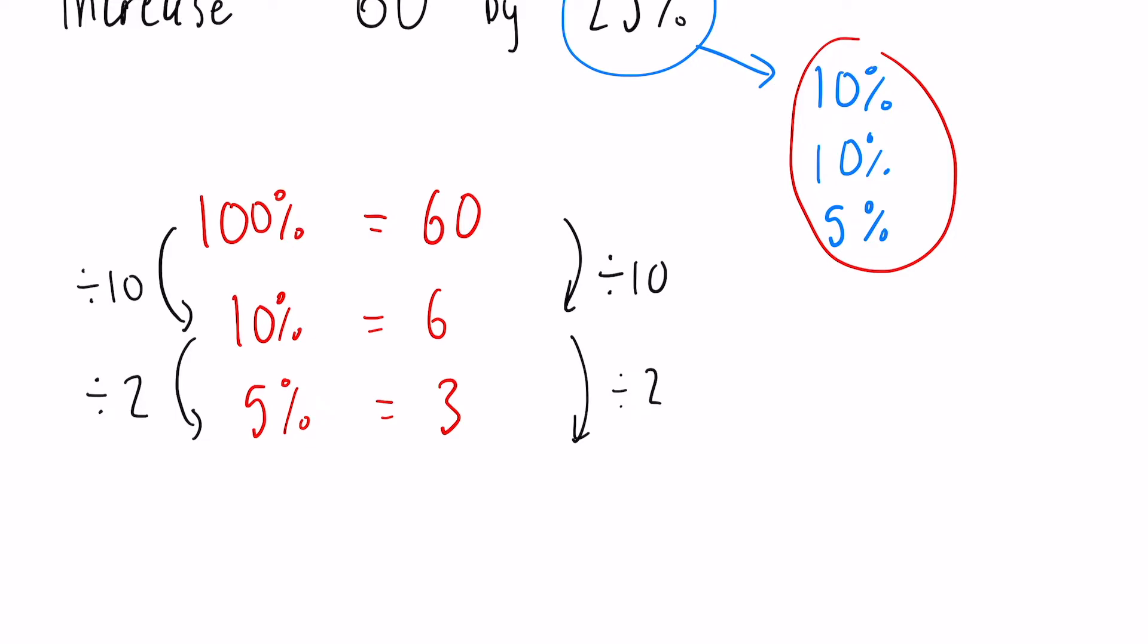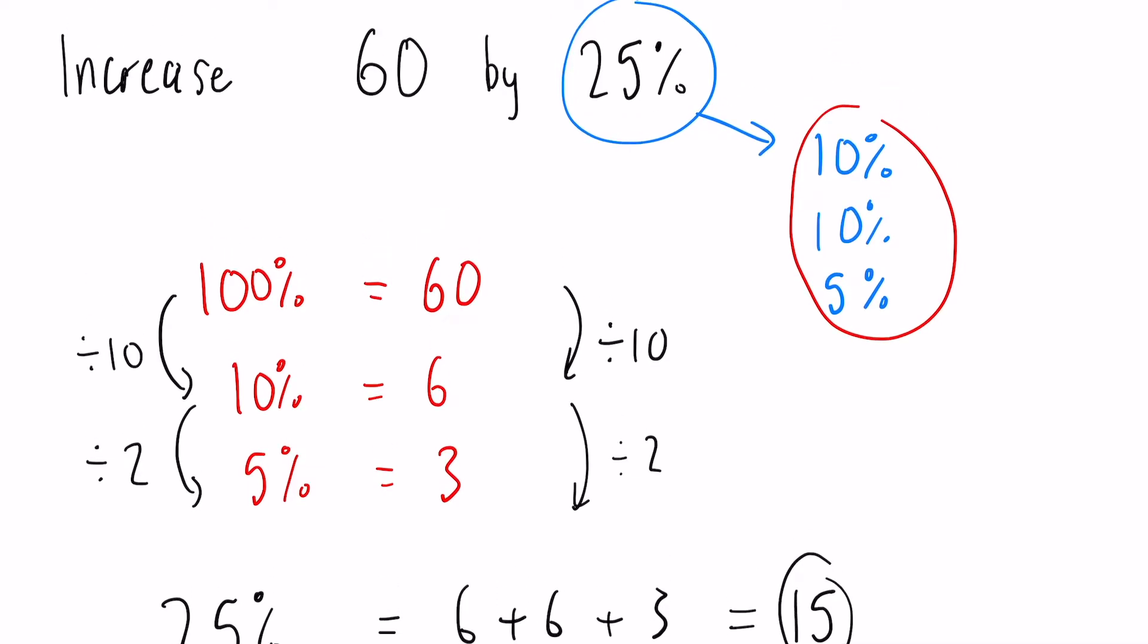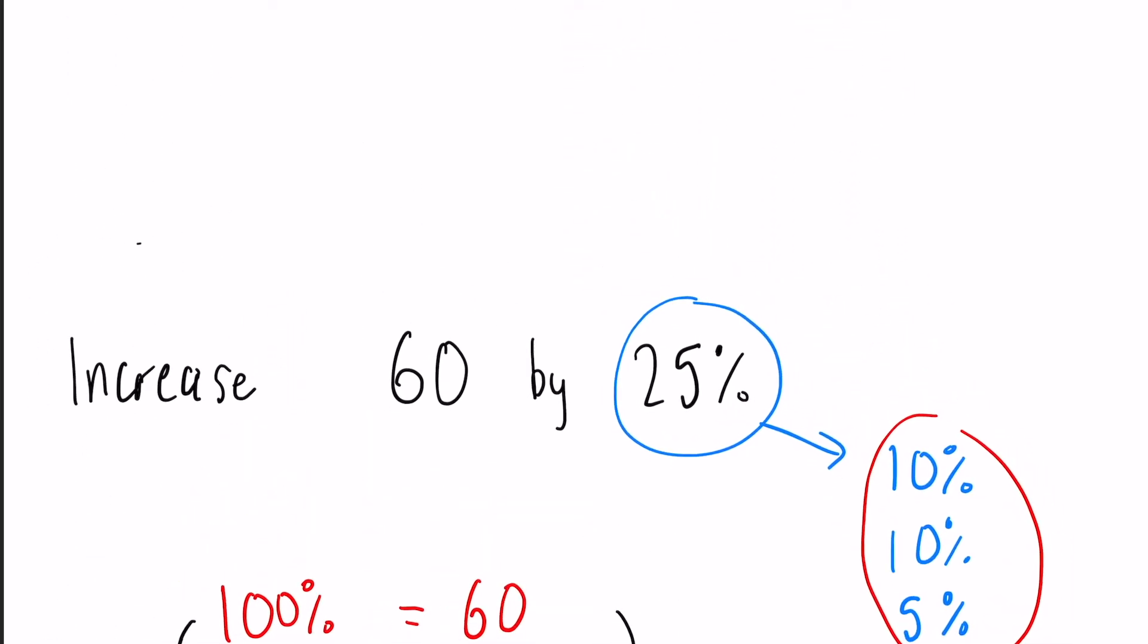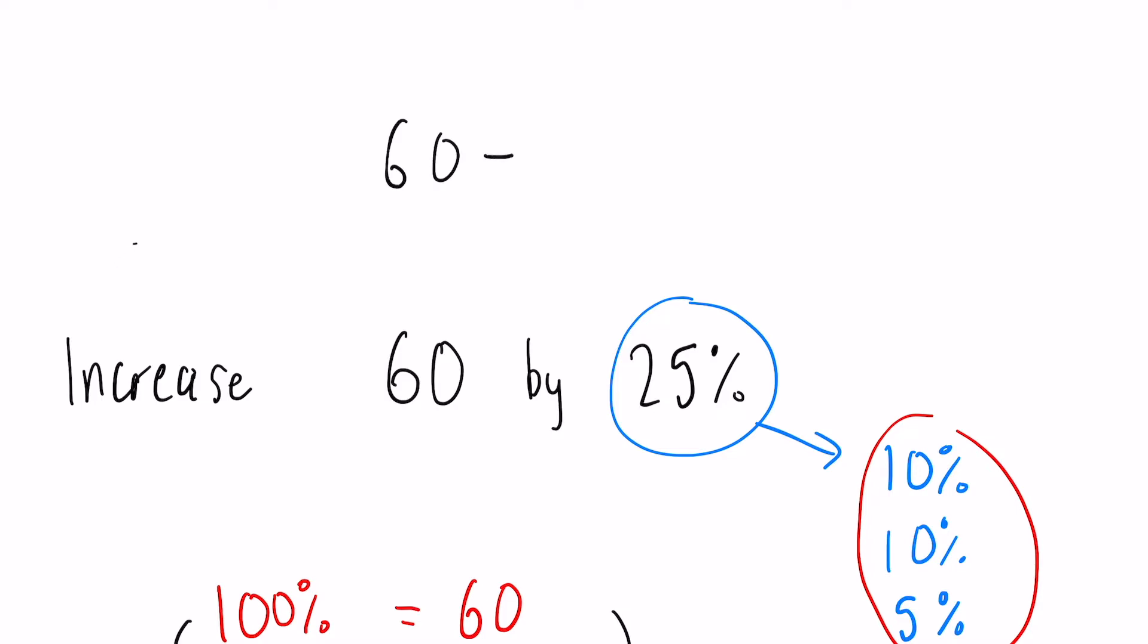From that we can conclude that 25% is going to equal 6 plus 6 plus 3, because that's 10% plus 10% plus 5%. So 6 plus 6 is 12, add 3 to that gives us 15. Now if we need to increase 60 by 25%, we need to do 60 plus that 15. So 60 plus 15, our answer is going to be 75.